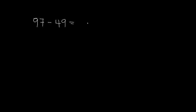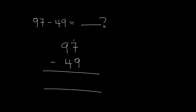Now let's look at an example where we need to borrow again: 97 minus 49. We have 7 at the top and 9 at the bottom — we cannot subtract because 7 is less than 9. So we borrow 1 from the 9 in the tens column. Since it's from the tens column, the borrowed 1 becomes 10. We're left with 8 in the tens. That 10 plus 7 becomes 17. Now 17 minus 9 gives 8. In the tens column we now have 8 minus 4, which gives 4. Our answer is 48.